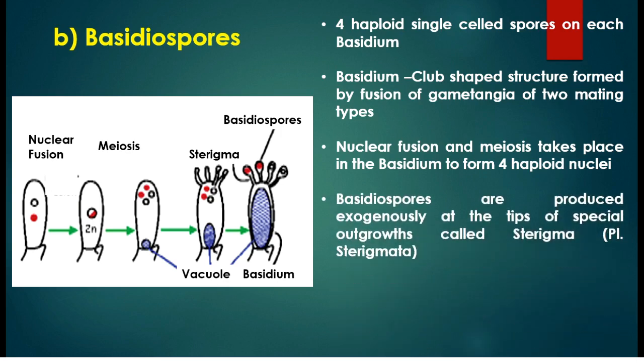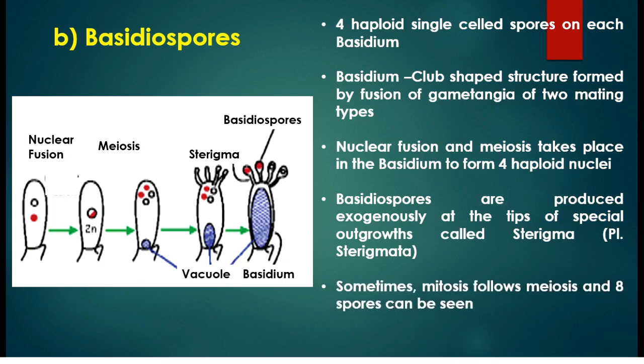In the case of ascospores, the haploid nuclei form spores endogenously within the sac-like ascus. But in the case of basidiospores, they are produced exogenously outside the basidium at the tip of special outgrowths called sterigmata. Thus four basidiospores can be seen, each on one sterigma protruding from the basidium. Sometimes this meiosis may be followed by mitosis, and in such cases eight spores can also be seen.